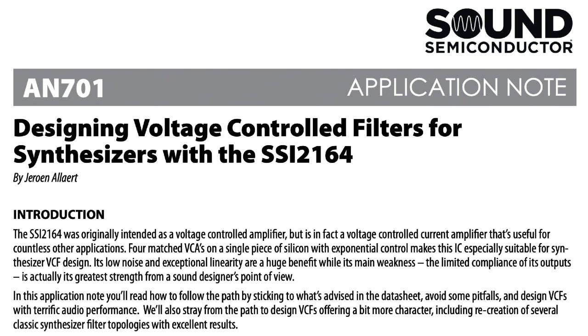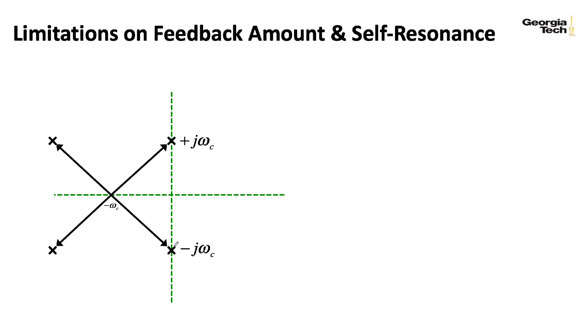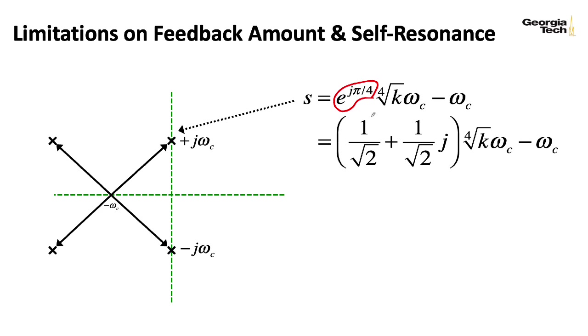Anyway, for what value of k do we hit this self-oscillation point, where we'll get an oscillation of omega c? So if we look at the pole in the upper right-hand corner here, what we need to do is figure out the k for which this expression winds up on the imaginary axis. So let me take this complex number here and rewrite it in polar form in terms of its real and imaginary components. I'm going to have imaginary components, but what I want to see here is for what case does the real part wind up turning into zero?